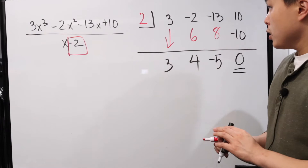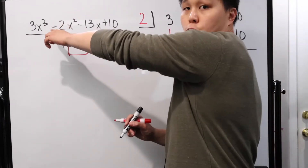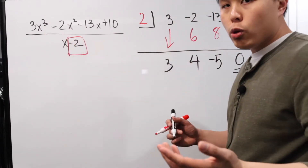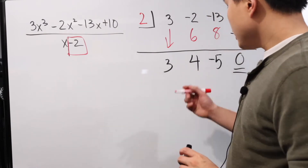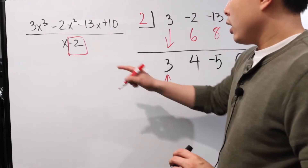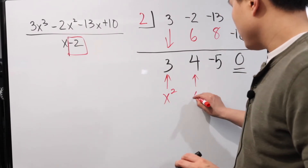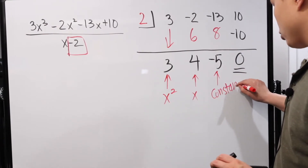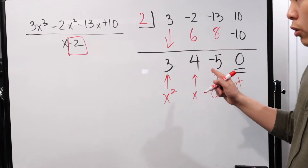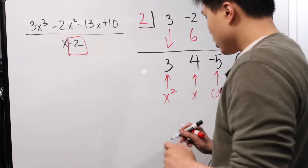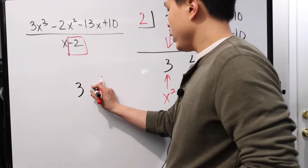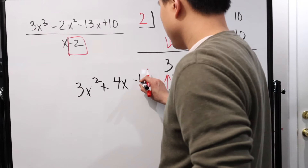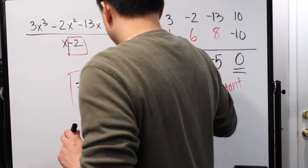So what does this mean? Well, we started with a cubic function. If we divide it by a monomial, it's going to go down — instead of a cubic function, it's going to be a quadratic. So immediately we can see that instead of x cubed, this is now x squared. Then this must be for the x, and this is the constant. So in other words, the end result after you divide using synthetic division is going to be three x squared plus four x minus five. And this would be your final result.